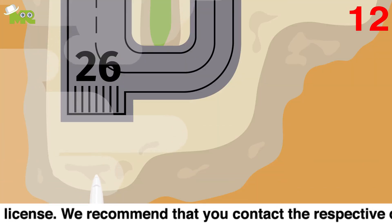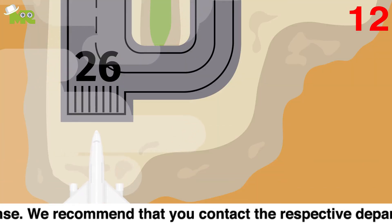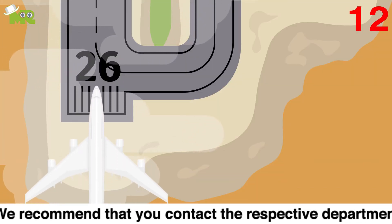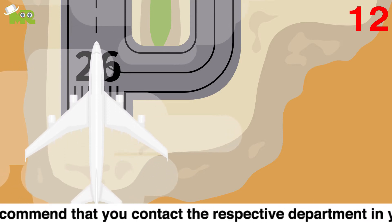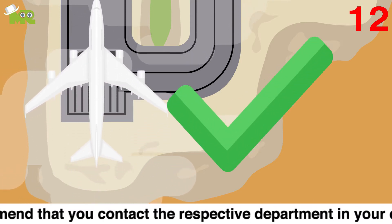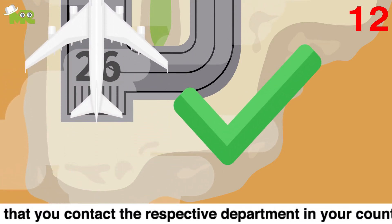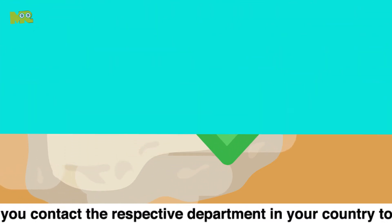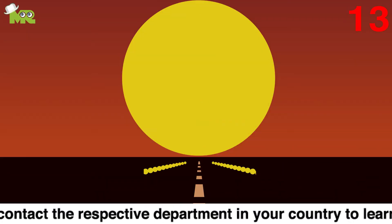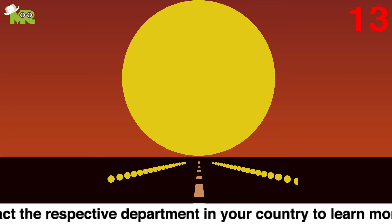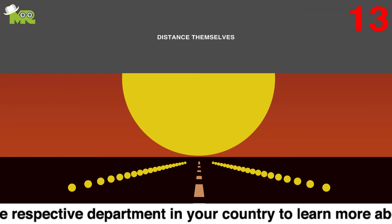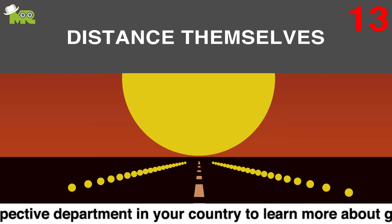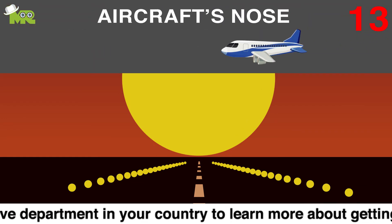Twelve, while landing, if the number starts to disappear under the aircraft's nose, you're on the right track. Thirteen, you are landing short if the numbers distance themselves from the aircraft's nose.